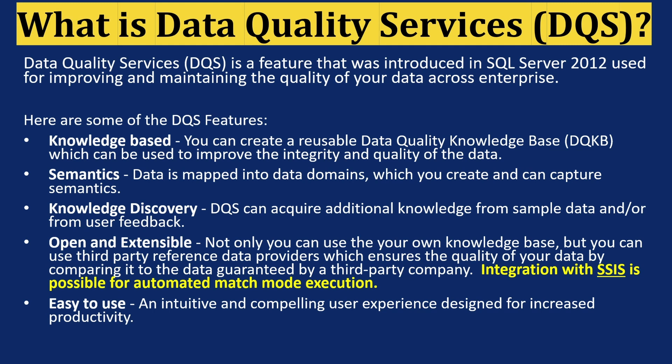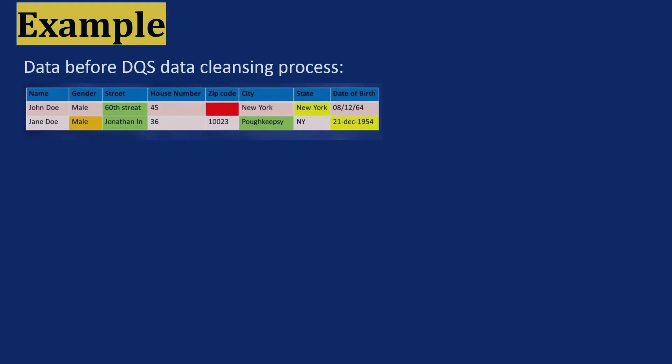I'm going to show you an example of a scenario. This is data before data quality services has been applied, and as you can see there are some issues on this data. Let me show you what happens when the data is processed through the data quality services.